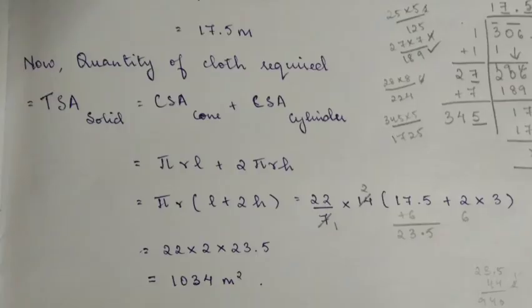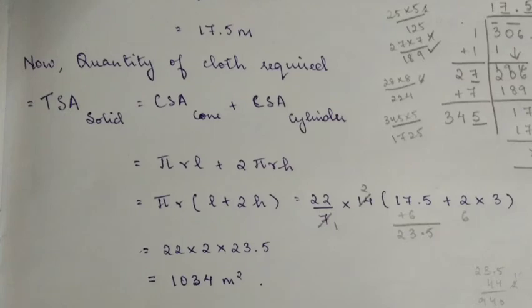Now for the quantity of cloth needed, we compute the total surface area. The total surface area equals the curved surface area of the cone plus the curved surface area of the cylinder. The result gives us 1034 square meters as the total area of cloth required.